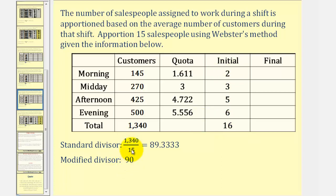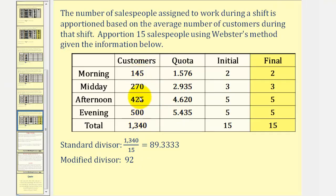Let's go ahead and increase the divisor to 92. We recalculate the quotas by dividing these values by 92. Let's go ahead and round to the nearest whole number: the first quota rounds up to two, here we round up to three, here we round up to five, here we round down to five. Notice finally we do have the right amount of salespeople — we have 15. This would be our final apportionment.